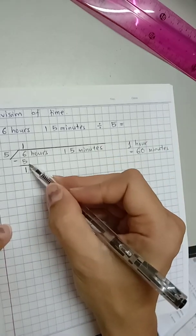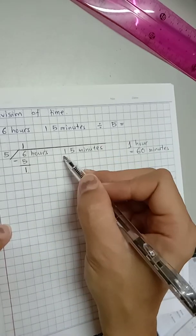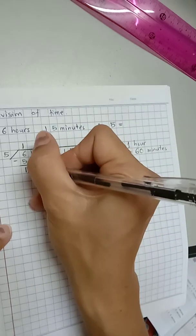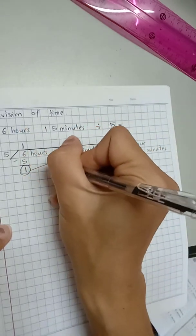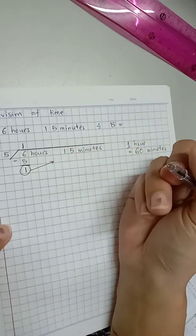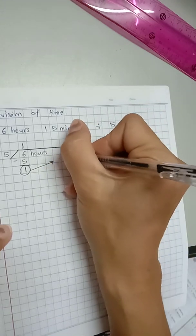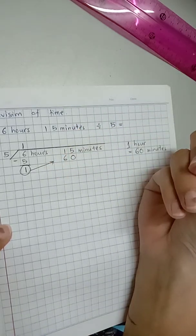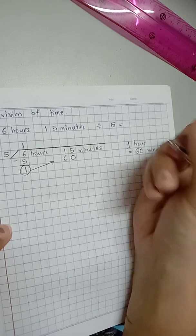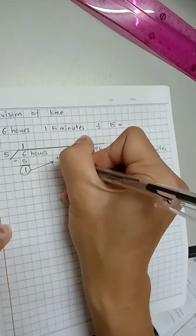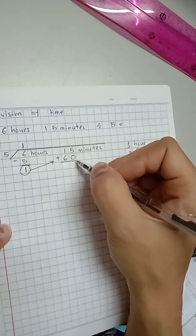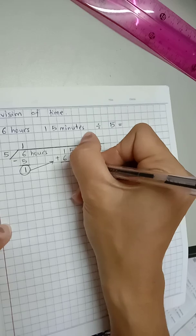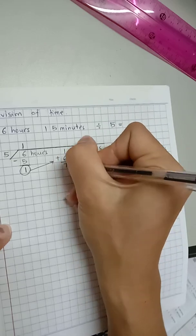So let's change this 1 hour into minutes. It will become 60 minutes. Don't forget to add. Now the minutes is no longer 15 minutes, but it is 75 minutes.